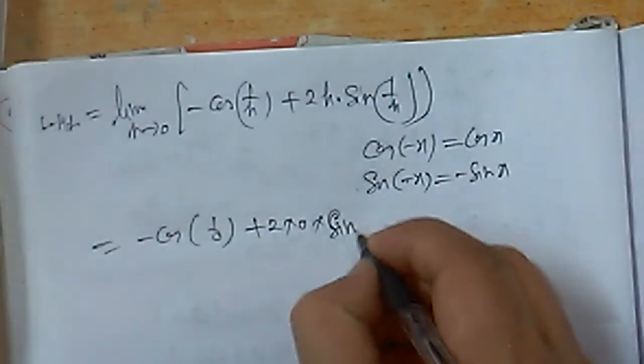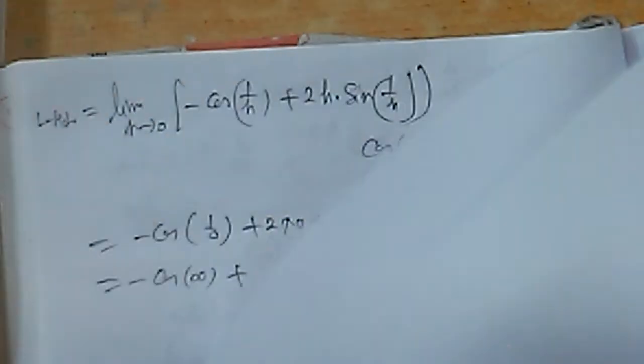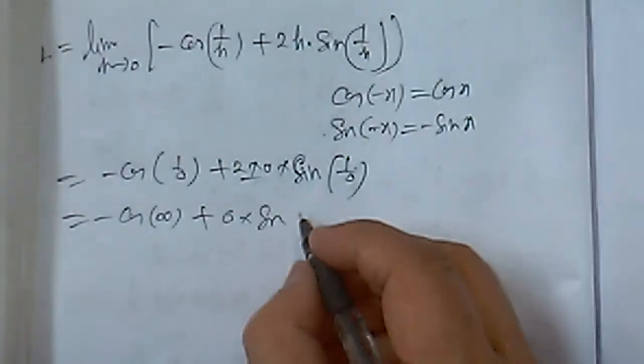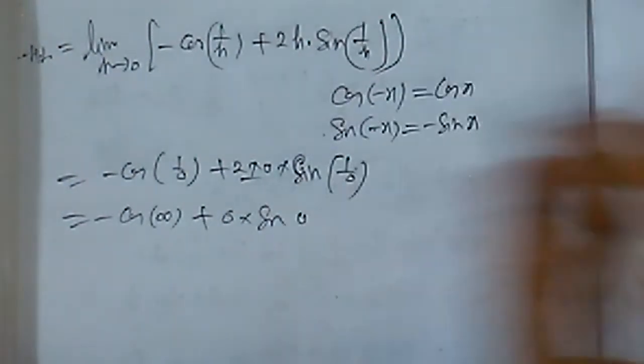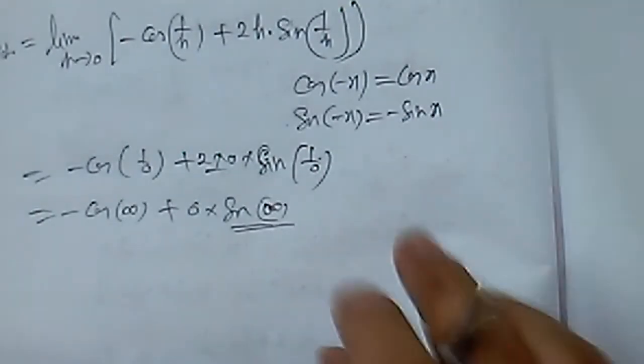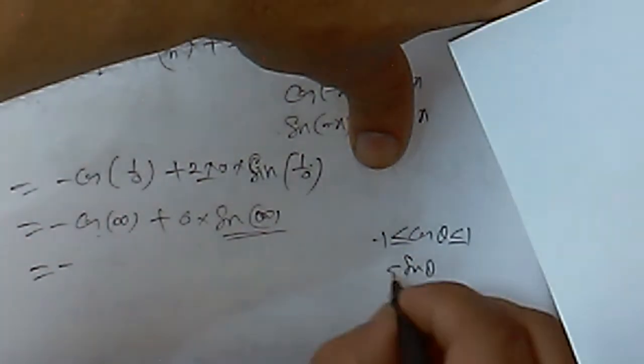Substituting h = 0: 1/0 → infinity, so cos(1/h) → cos(infinity). The value of cos(infinity) oscillates between -1 and +1, which is an oscillatory value. Similarly sin(1/h) → sin(infinity), also oscillatory between -1 and +1. The term 2h·sin(1/h) → 0 as h→0. But -cos(1/h) does not settle to a fixed value.